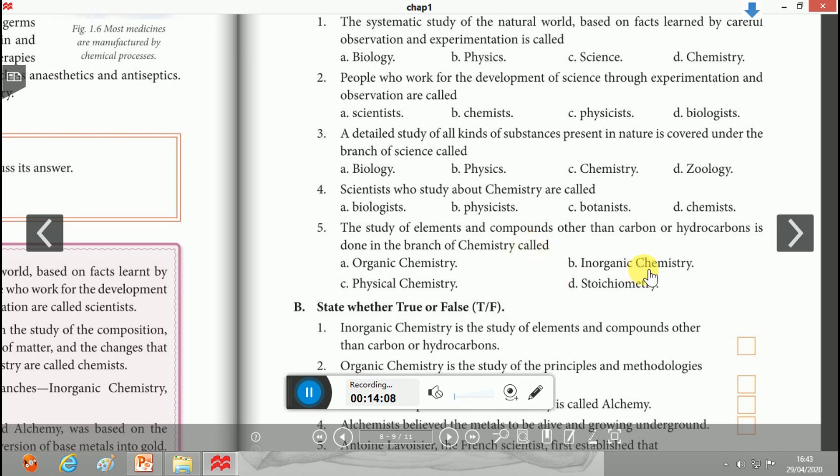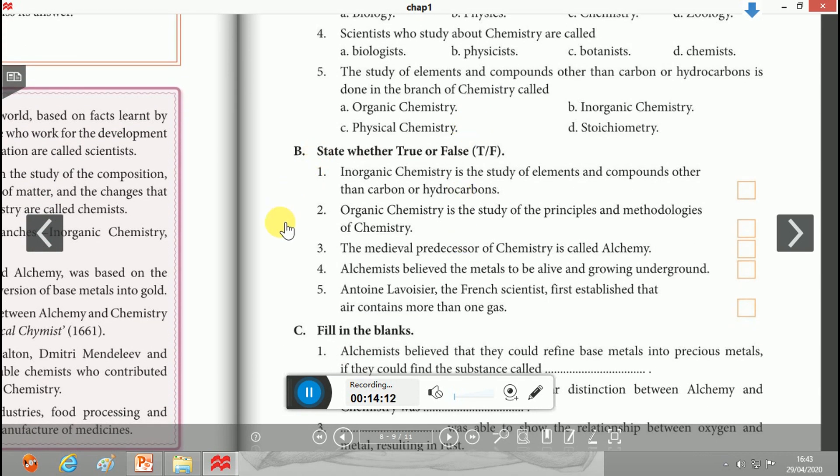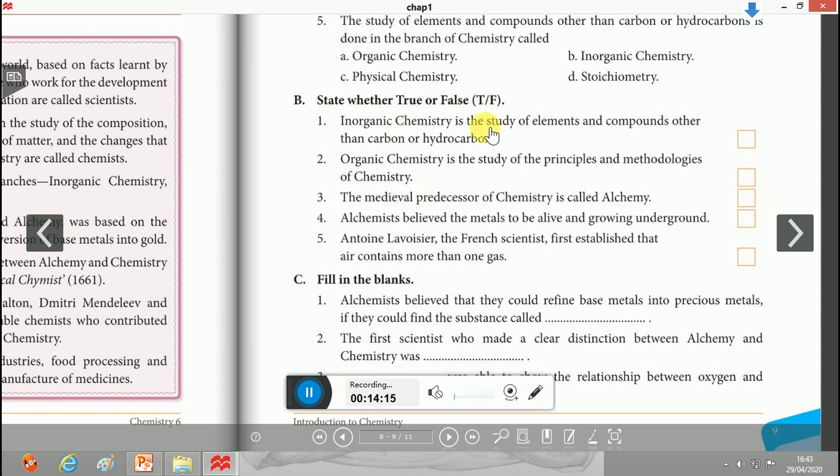State whether True or False: Inorganic chemistry is the study of elements and compounds other than carbon and hydrocarbons - yes, it is true. Organic chemistry is the study of the principles and methodologies of chemistry - no, it's false; the correct statement would be physical chemistry. The medieval predecessor of chemistry is called alchemy - yes, it is true. Alchemists believe metals to be alive and growing underground - yes, it is true. Antoni Lavoisier, the French scientist, first established that air contains more than one gas - yes, it's true.